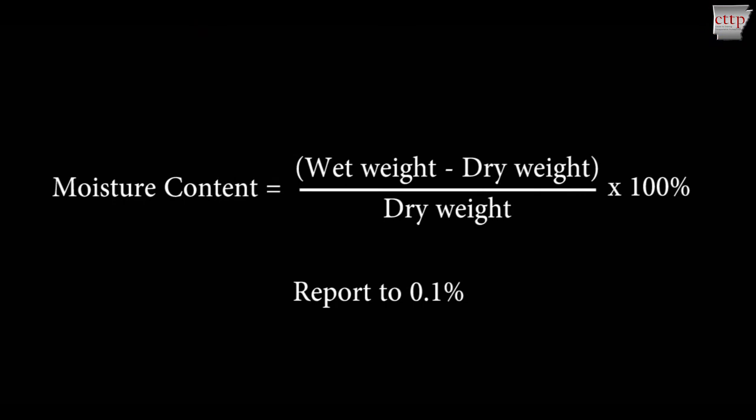Calculate the moisture content by dividing the difference in the wet and dry weights by the dry weight, and report to the nearest 0.1%. Note that for soils, the tare weight must be removed before running this calculation.